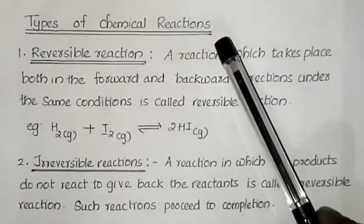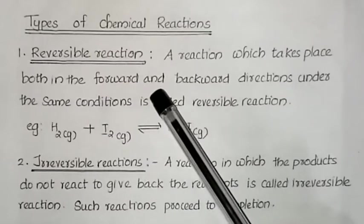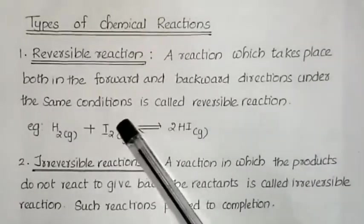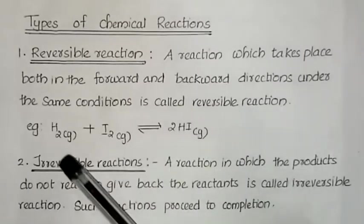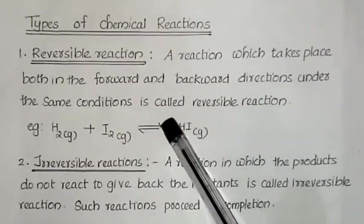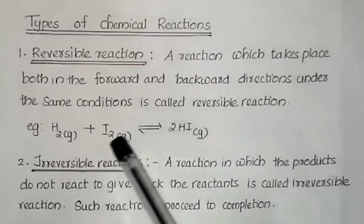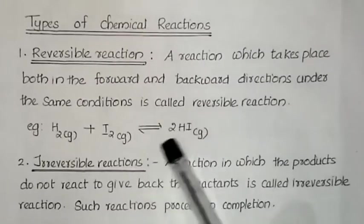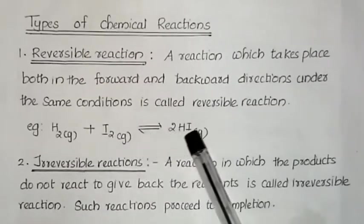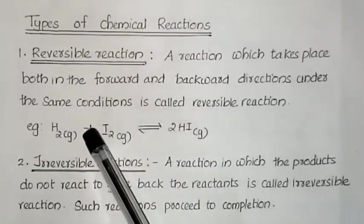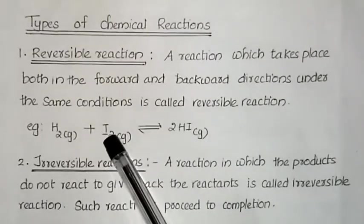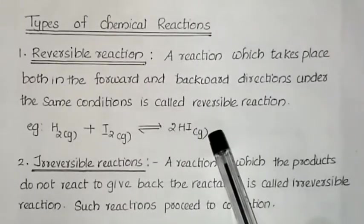Types of chemical reactions. First: reversible reaction. A reaction which takes place both in the forward and backward directions under the same conditions is known as a reversible reaction. For example, H₂ gas plus I₂ gas reversibly gives 2HI. The forward reaction is hydrogen plus iodine giving 2HI, and 2HI decomposes to form hydrogen and iodine in the reverse reaction.